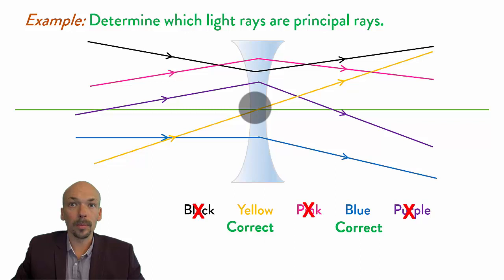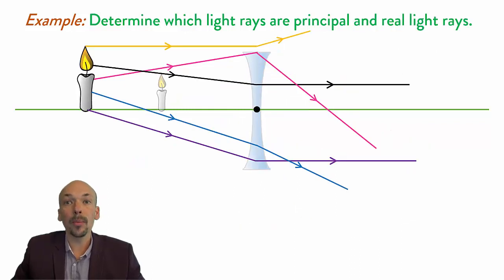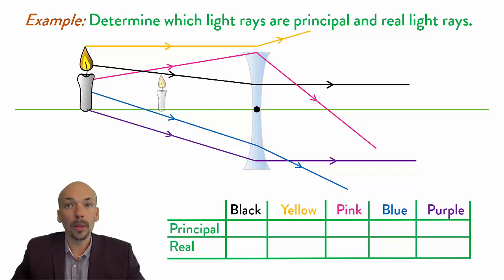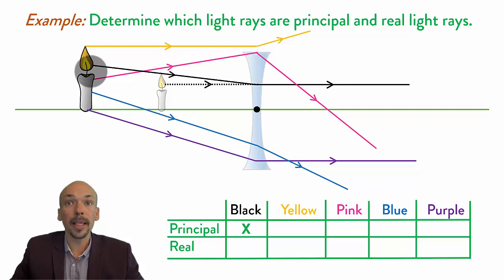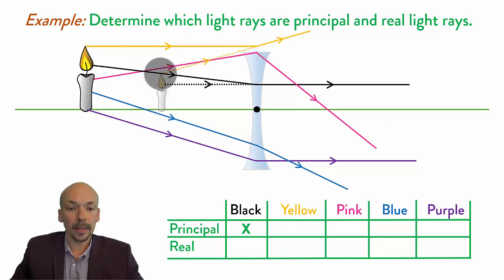Now we are going to the second example. Determine which light rays are principal and which ones are real. This is a very difficult one, so if you don't get it the first try, it doesn't matter as long as you understand it afterwards. The black one starts here in the middle of the flame, it goes to the lens and then goes parallel. We draw this one back and it hits the same spot as where it came from. So this one is a principal ray. The yellow one starts parallel, then goes away, and if we draw it back, we see that it hits the top — it also came from the top. So this one is also a principal ray.